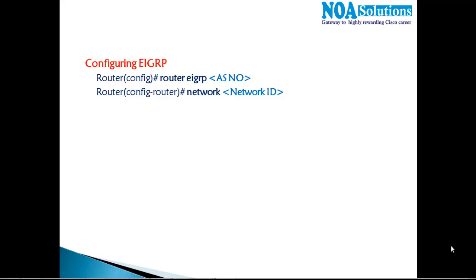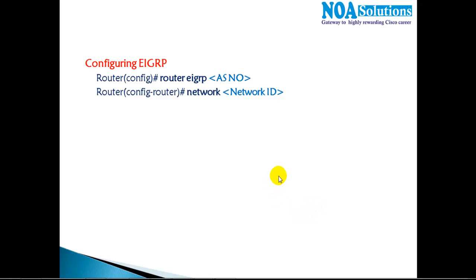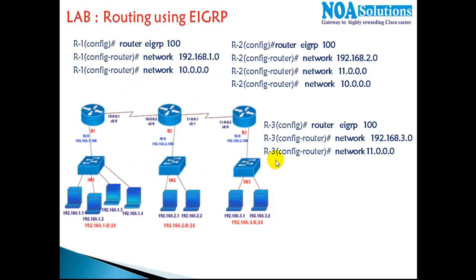In this section we'll continue with EIGRP configuration. We've already seen the basic processes and features of EIGRP and the metric calculation process. In this section we'll continue mostly with practicals — we'll take three routers and verify how EIGRP is going to be configured.